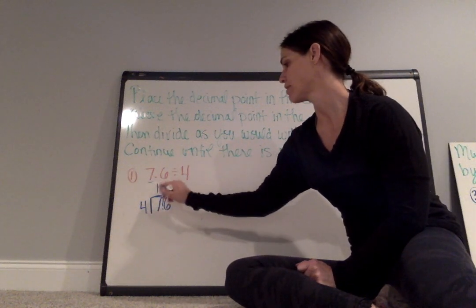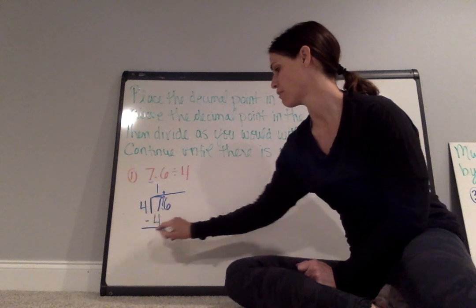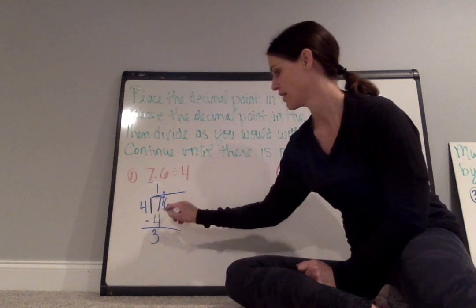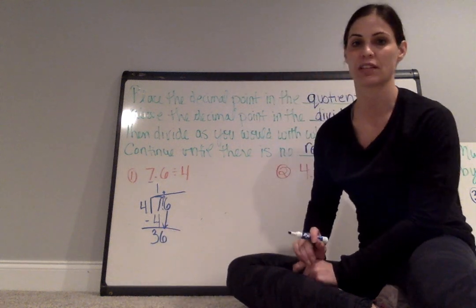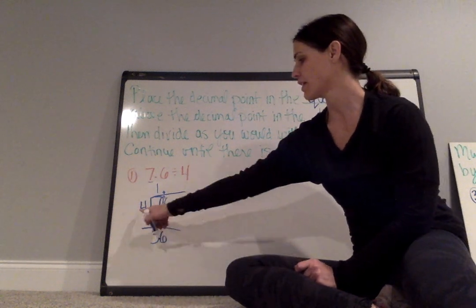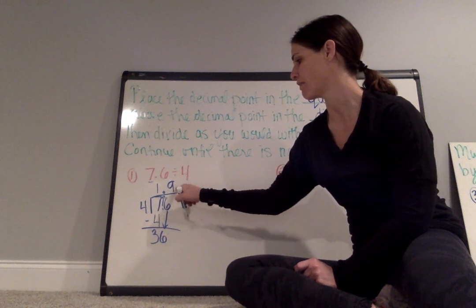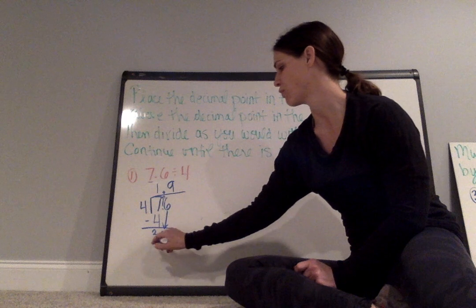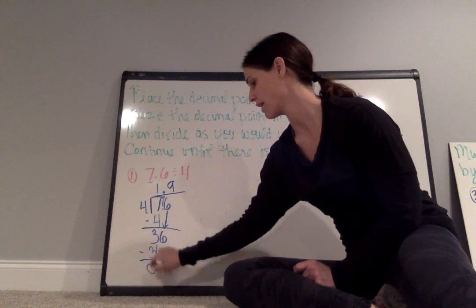4 goes into 7 once. 1 times 4 is 4. I subtract and I have 3. I bring down the next digit in the dividend, which is 6. 36 divided by 4 is 9. So I put 9 in my quotient above the 6. 9 times 4 is 36. I subtract and I have 0.